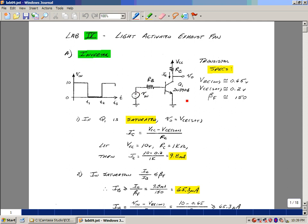What's shown here is a transistor with two resistors. These are some of the specifications of this particular transistor. It's a 2N3904. It has a turn-on voltage on the base emitter around 0.65, a saturation voltage of 0.2, and a gain of about 150.